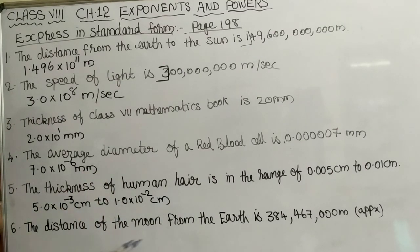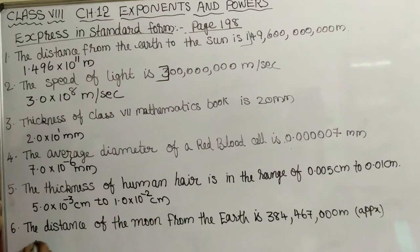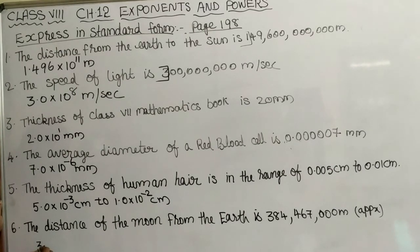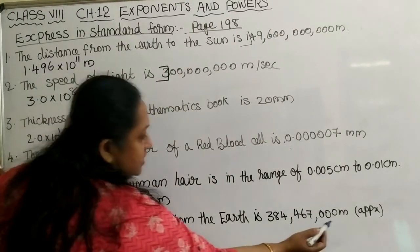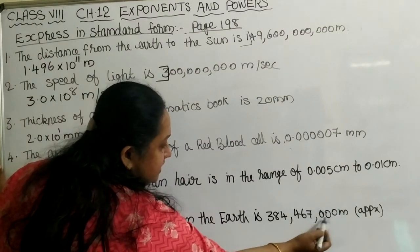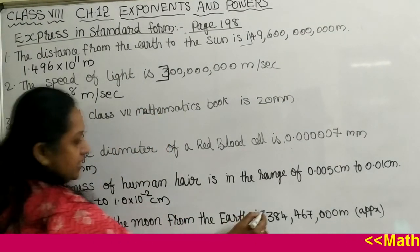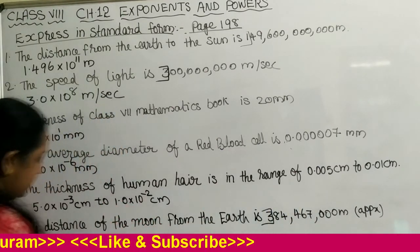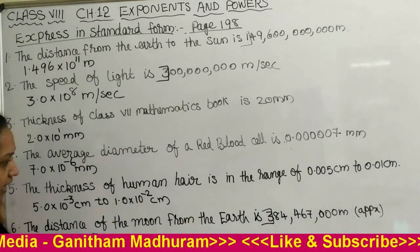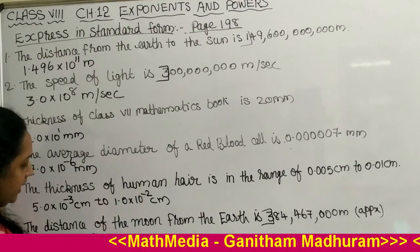Similarly, the distance of the Moon from the Earth is given approximately in meters. It is a whole number, so after the first digit we put the decimal point. We write 3.84 — digits 4, 6, 7 — into 10 raised to the power. Counting the digits after the first digit, there are 8 digits. So we write 10 raised to 8 meters approximately.